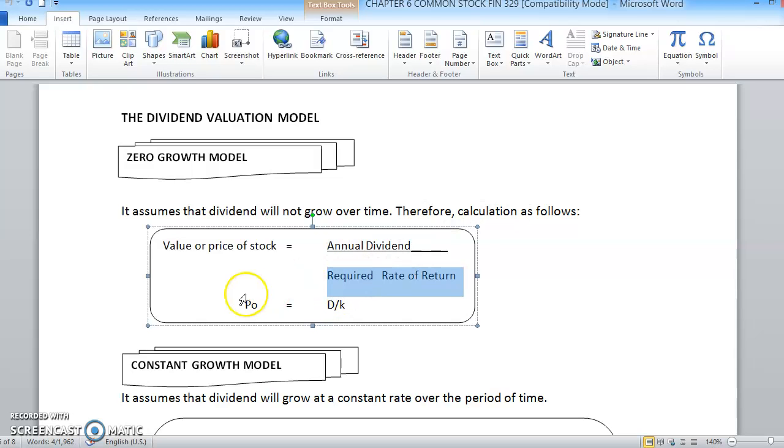So dalam kita punya valuation of common stock, so VCS, value of common stock, ataupun P0, price of the common stock. So P0 equal to annual dividend bahagi dengan the required rate of return.